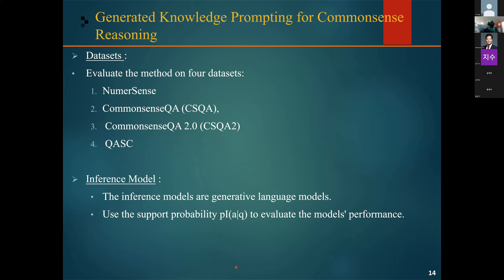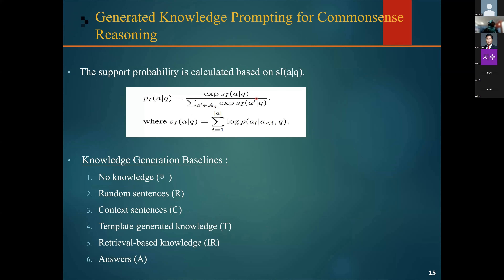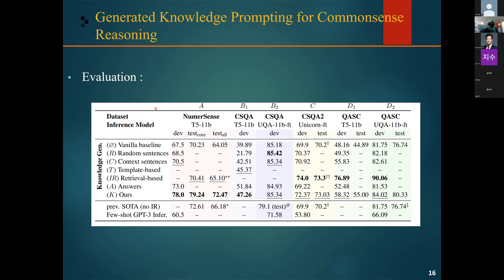They compared their method to different baselines. The results showed that their method achieved new state-of-the-art performance on NumerSense with an improvement of around six percentage points over the previous method, which was based on the zero-shot T5 model. On CommonsenseQA 2, they also improved on the previous method. For the Question Answering Science dataset, they improved the unified question-answering model by around three percentage points.